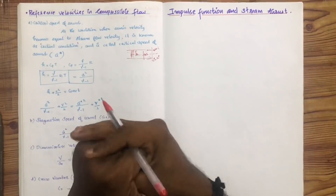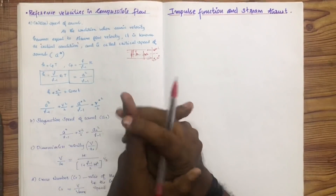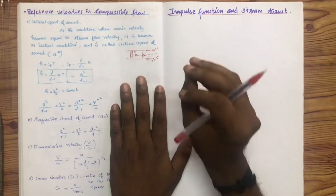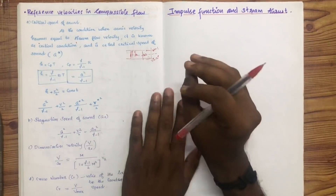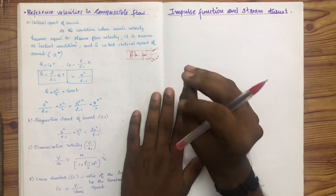At the critical condition, we use a reference Mach number. The star notation applies to all critical properties: V-star, T-star, P-star, and H-star.